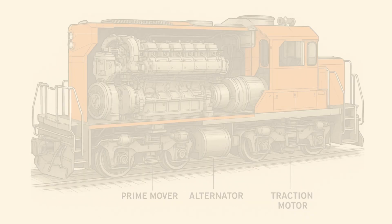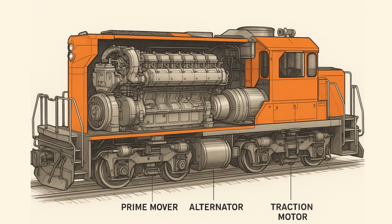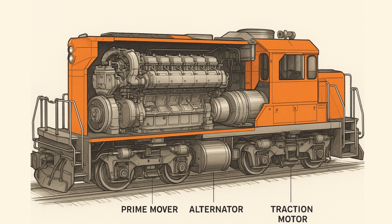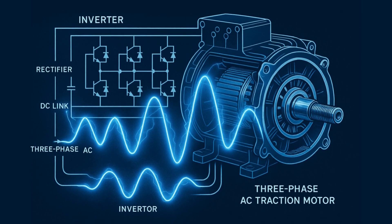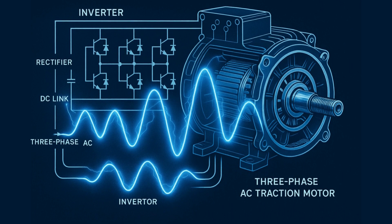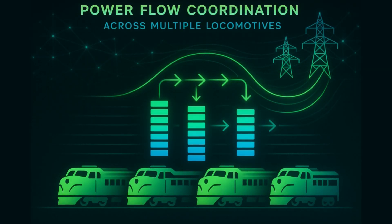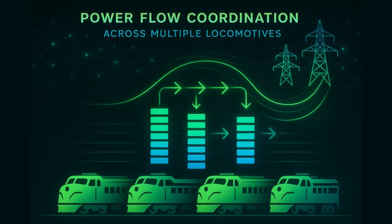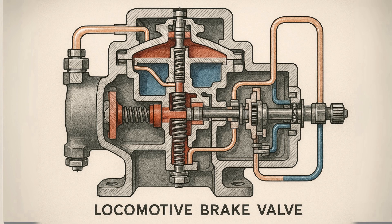In a multiple unit consist, each locomotive maintains its own prime mover and alternator system. The individual alternators feed their respective traction motor inverters, but power output is coordinated through the MU control system. Modern AC traction systems use three-phase inverters that convert the alternator's AC output to variable frequency AC for the traction motors. The master unit's load regulator coordinates power output across all units, ensuring optimal wheel-rail adhesion and preventing wheel slip through sophisticated torque management algorithms.